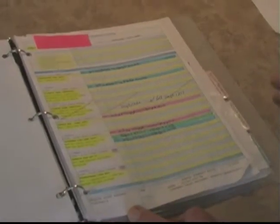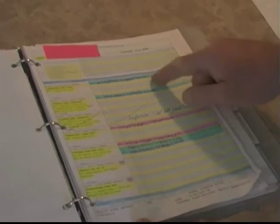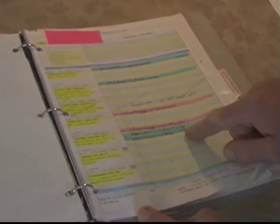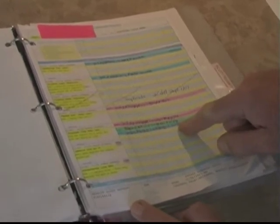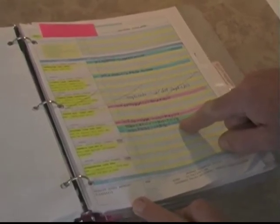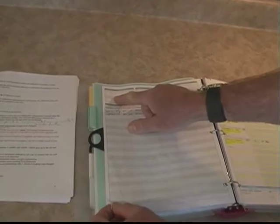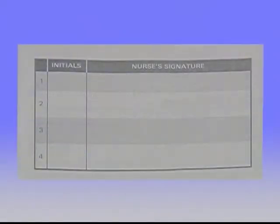If you are working in a home that has a medication administration record, check that no one has given the medication already. You will know this because someone else's initial will be in the place where you would sign when you are finished. If this has happened, you will need to contact someone in authority for further direction. On the back of the MAR, there may be a list of caregiver signatures and initials — make sure you sign this so there is a record. If your agency has a master record of caregiver signatures and initials, you may not need to do this previous step.